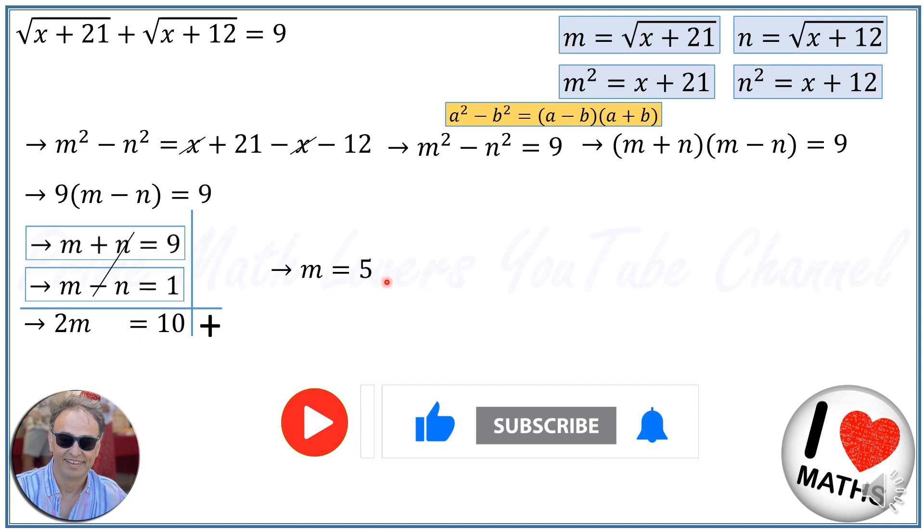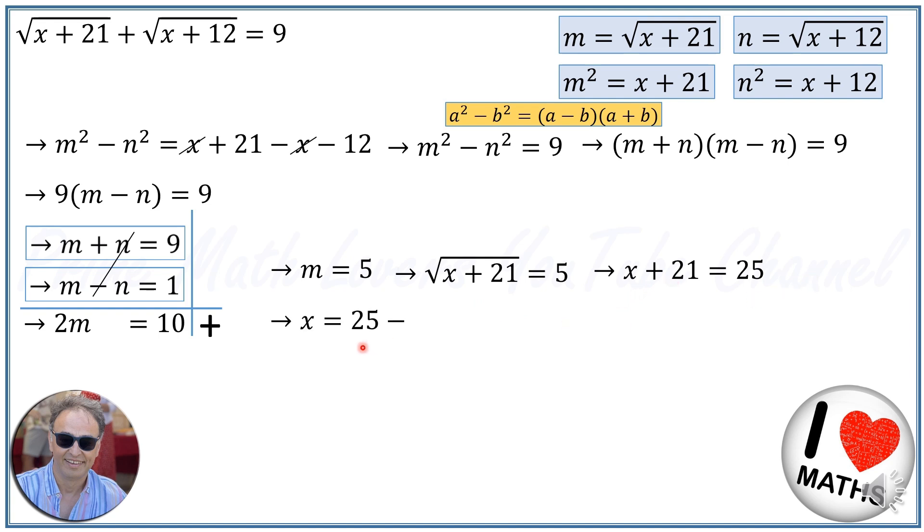2m equals 10 means m equals 5. And we have m equals square root of x plus 21, so square root of x plus 21 equals 5. If I raise both sides by 2, I'll have x plus 21 equals 25. I take 21 to the other side, so x equals 25 minus 21, and the answer is x equals 4.